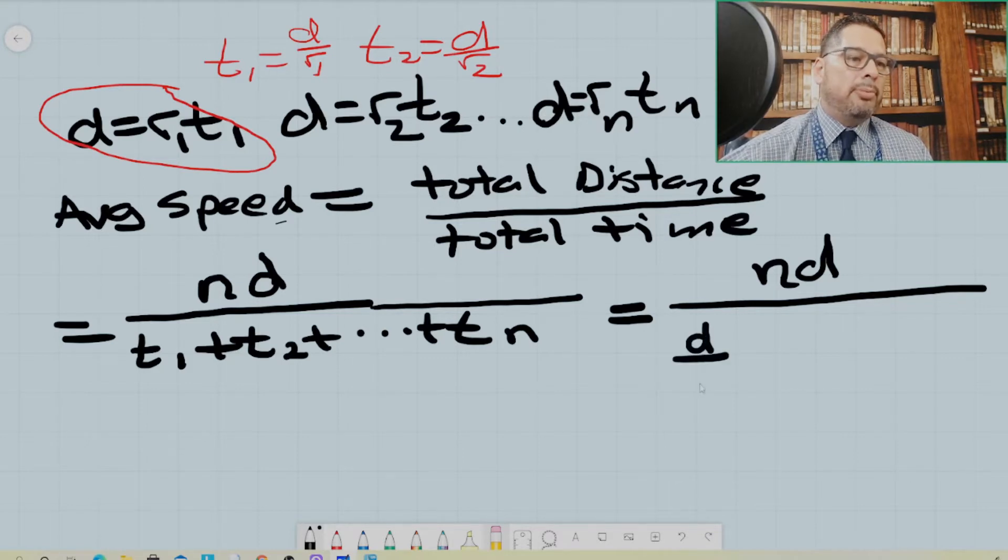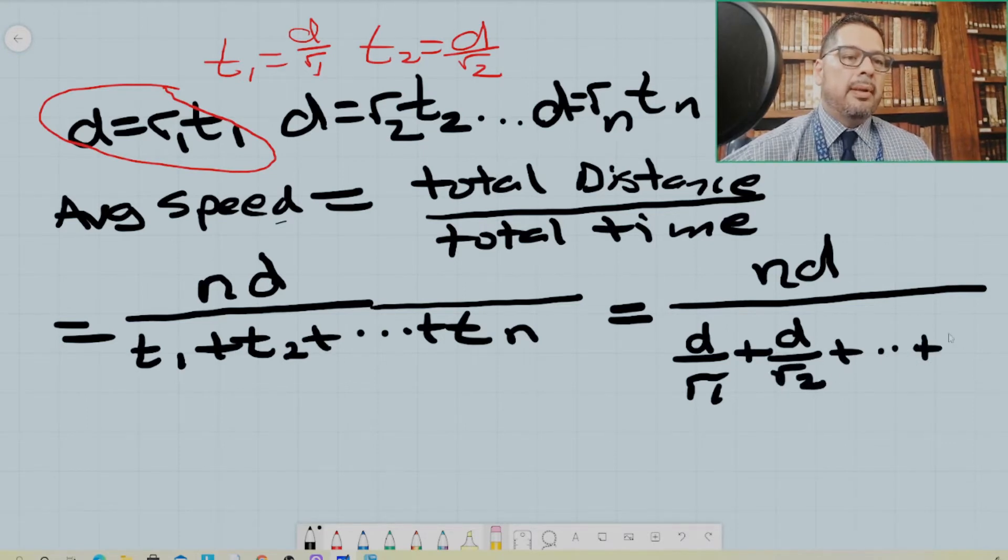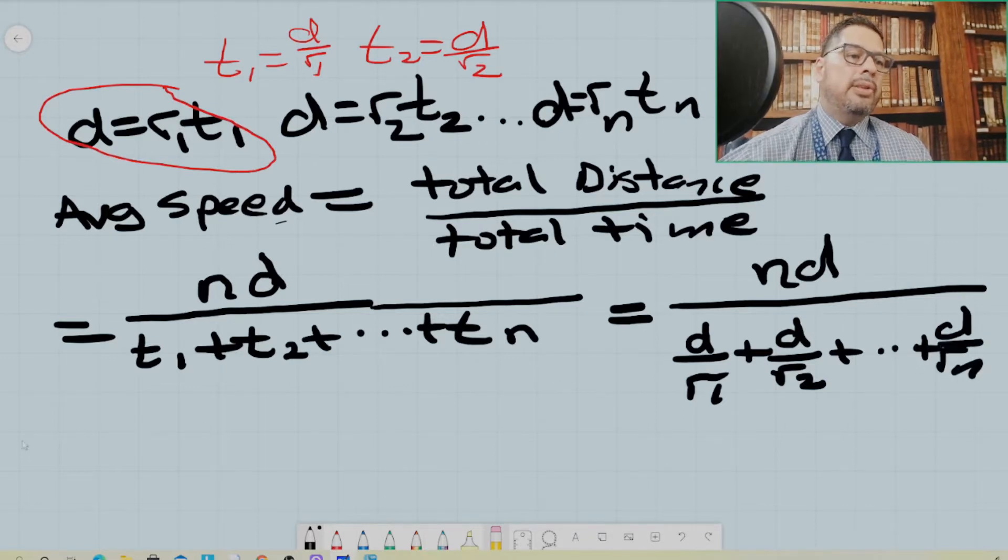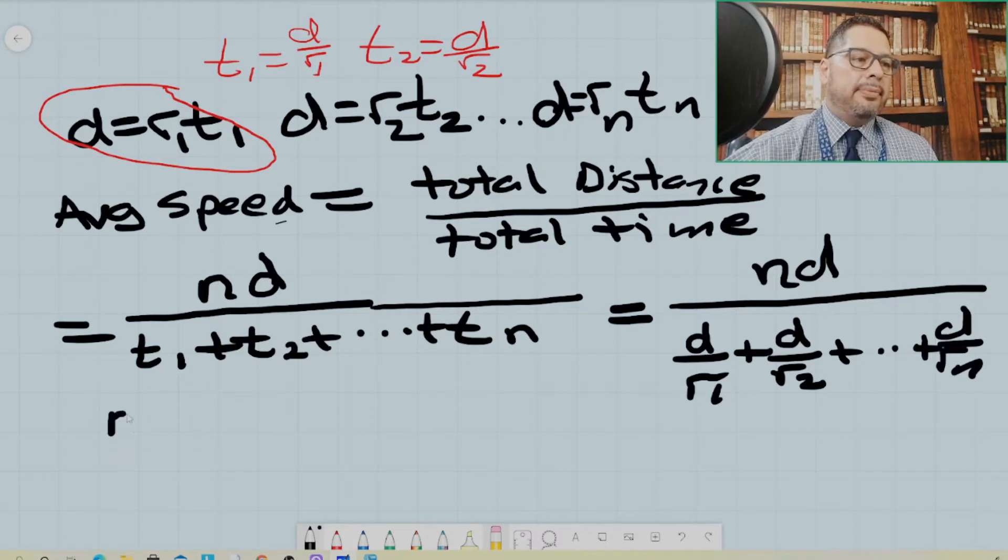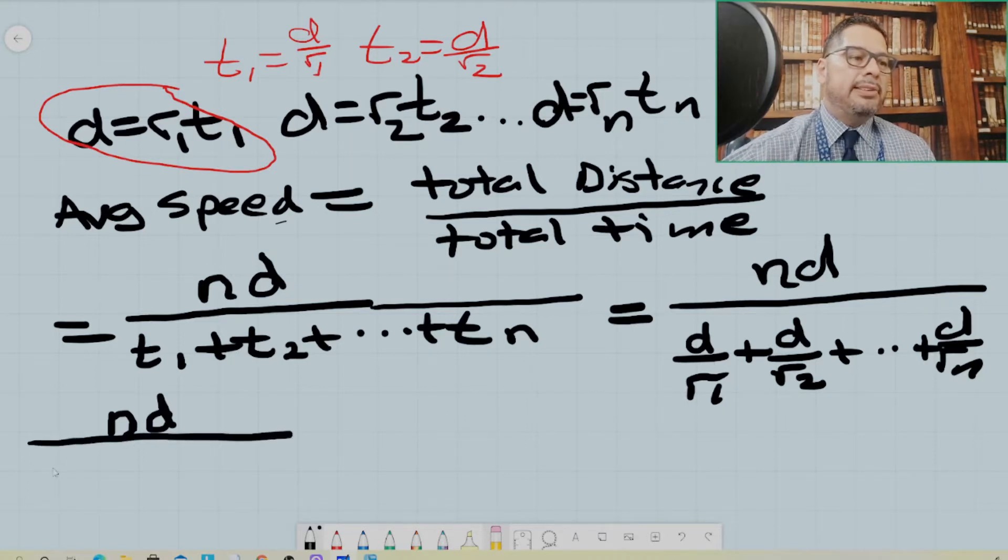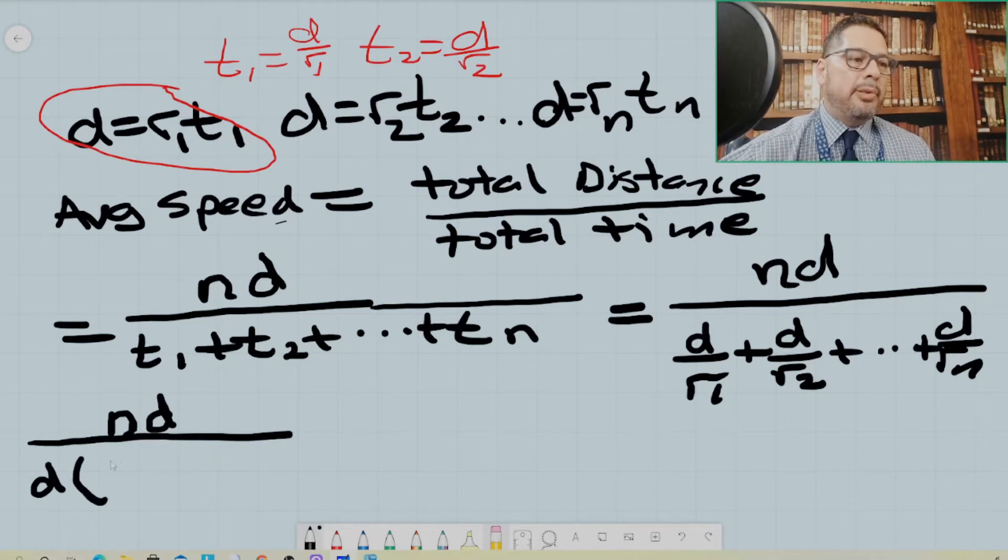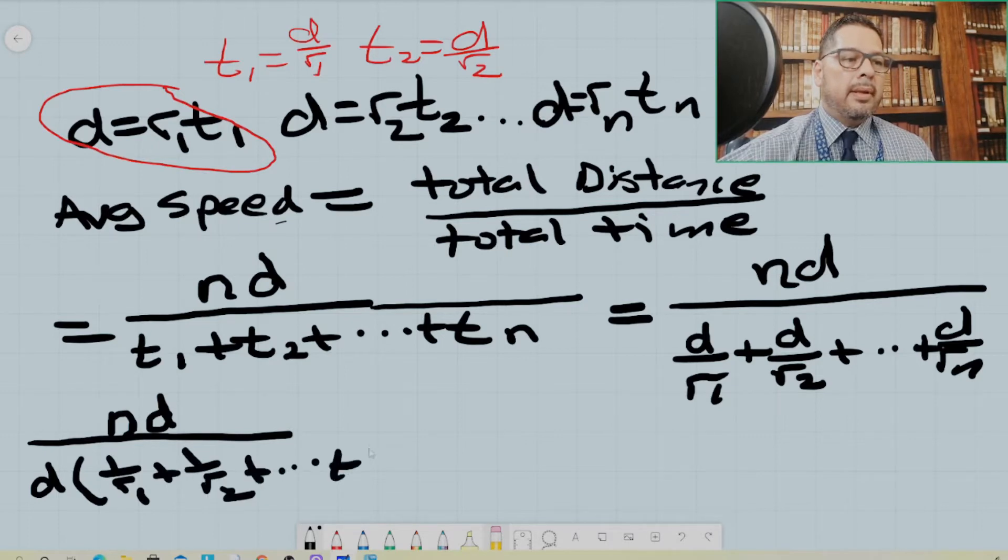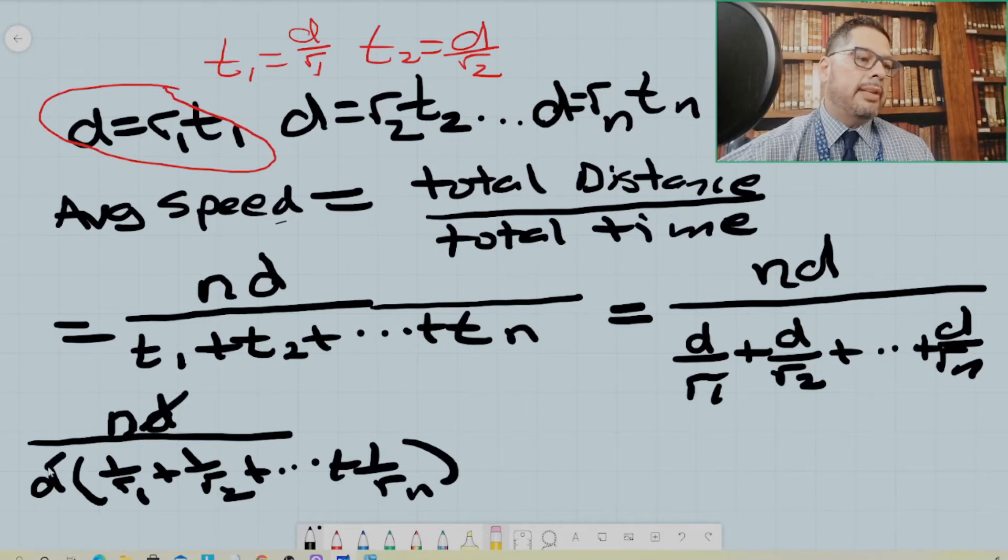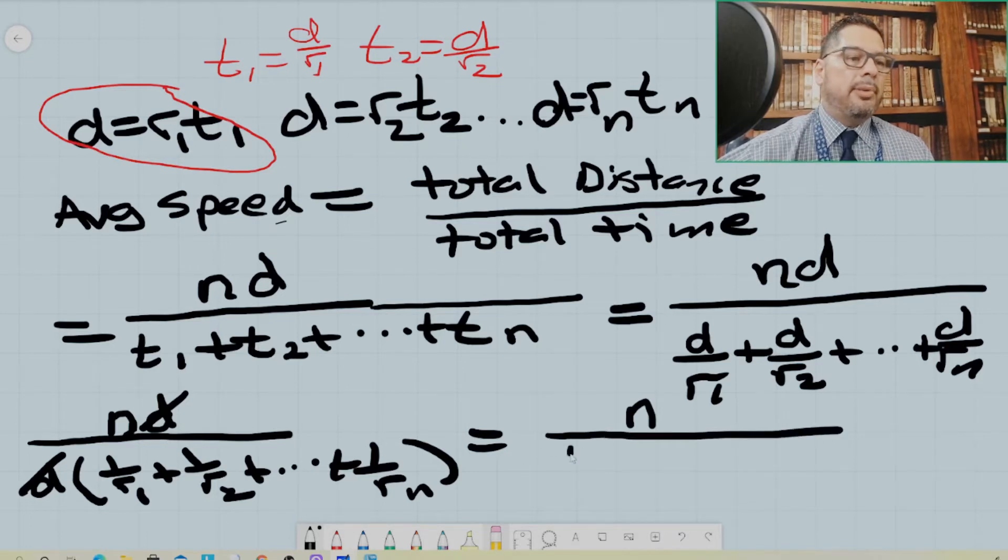So on top, you still have your total distance traversed. d was traversed n times, so the total distance was nd. But on the bottom, you can factor out a d. So when you factor out a d, you're left with the sum of the reciprocals of the corresponding rates. And when you cancel out, what you have is the harmonic mean of the set of rates.